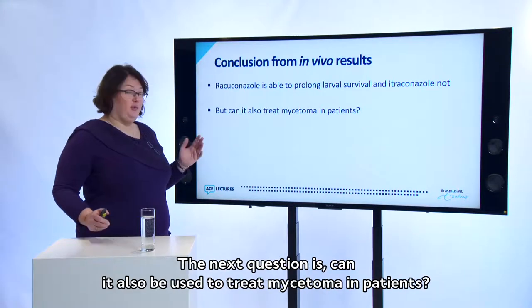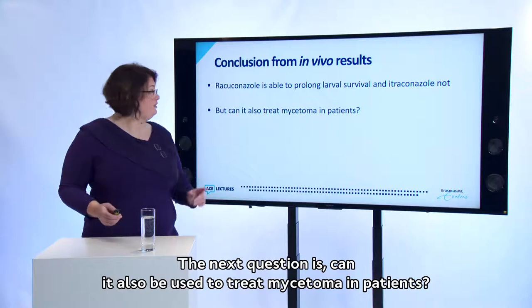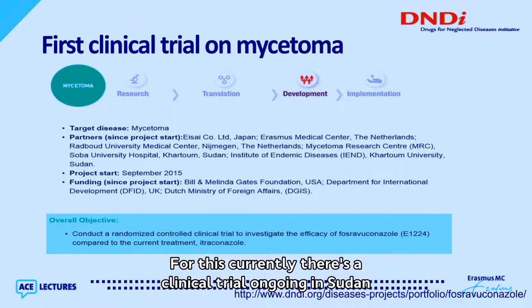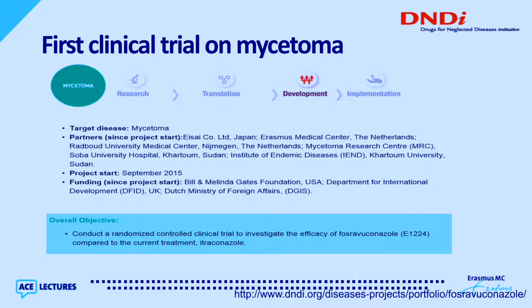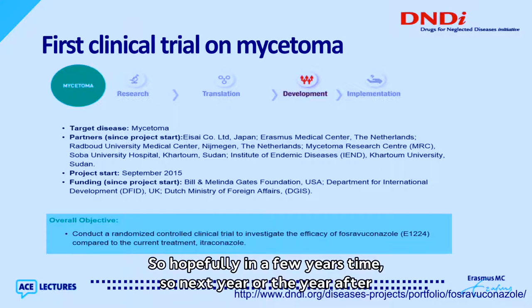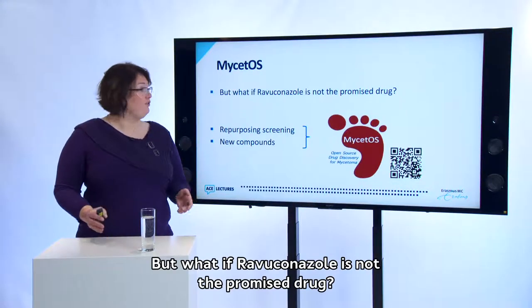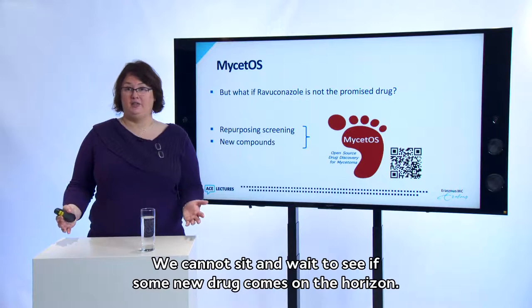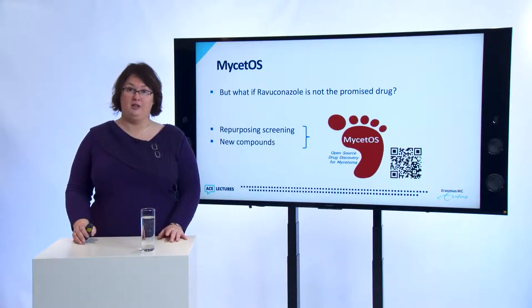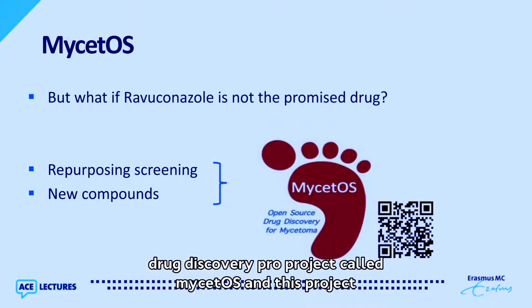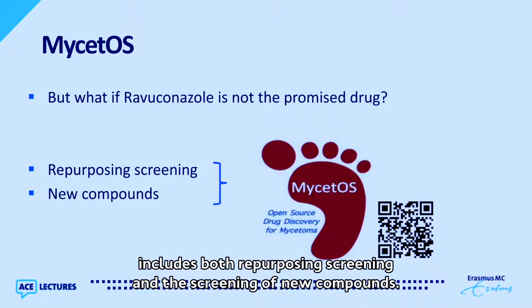The next question is whether raviconazole can be used to treat Mycetoma in patients. A clinical trial is currently ongoing in Sudan with Erasmus MC as a partner, and hopefully within the next year or two we will know if raviconazole is indeed better than itraconazole. But in case it isn't, we can't sit and wait — so we started an open source drug discovery project called Mycetos, which includes both repurposing screening and screening of new compounds.